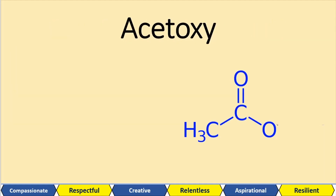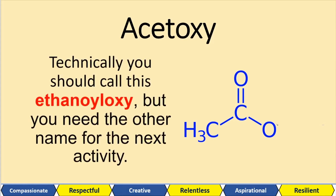For the next activity, you don't need to know how to name this. This group here is acetoxy — it almost looks like a carboxylic acid, but there's no hydrogen attached on the right-hand side. Technically it should be called ethanoyloxy, but for the next activity we call it by this American name. We've got two carbons — that's where we get ethanoyloxy — and the oxy is for the oxygen attached to the carbonyl carbon.